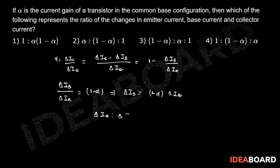ratio Delta I B ratio Delta I C is equal to 1 ratio 1 minus alpha ratio alpha. So option number fourth is the correct answer to this problem.